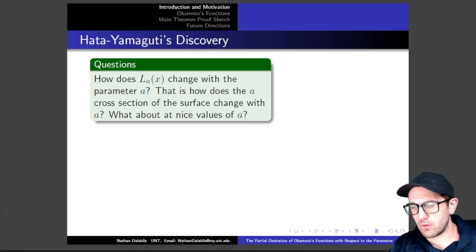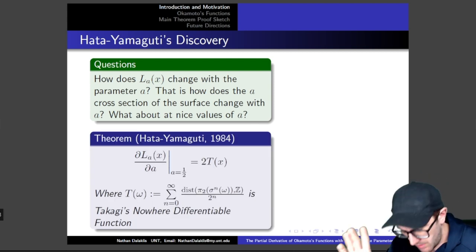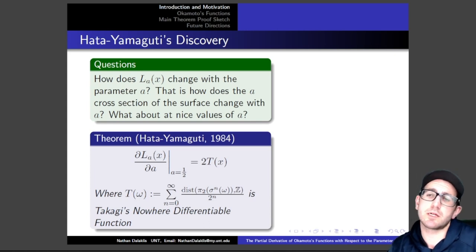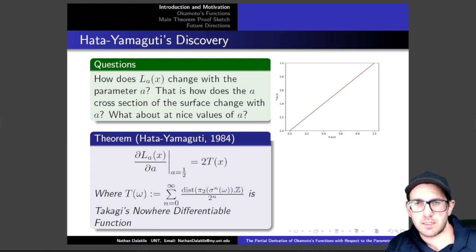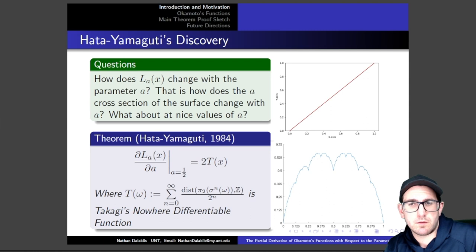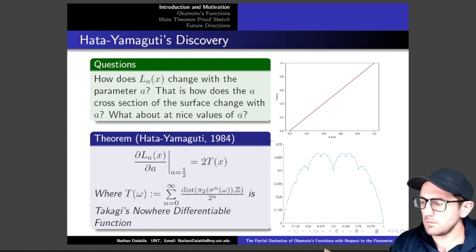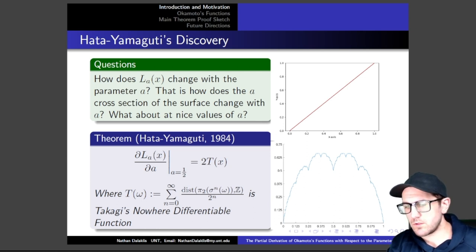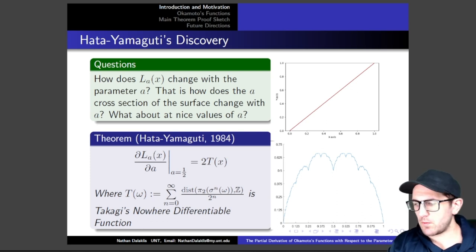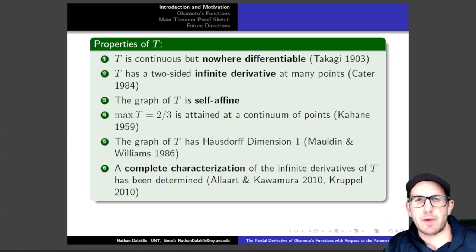We want to know how this thing changes as we slide the parameter plane around locally. The nicest value of A is A equals one-half, because that gives us the identity function. Hata and Yamaguti in 1984 found a very close connection between this trivial case of Lebesgue singular function at A equals one-half and a famous fractal — or, if you're used to more of a Western interpretation, the Blancmange curve. And so we know a lot of things about Takagi's nowhere differentiable function, which gives a really nice correspondence.